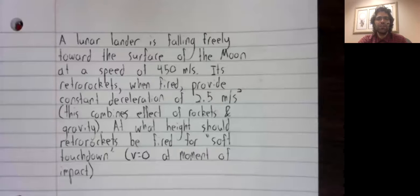At what height should retro-rockets be fired for a soft touchdown? That occurs if V, the velocity, equals zero at the moment of impact.